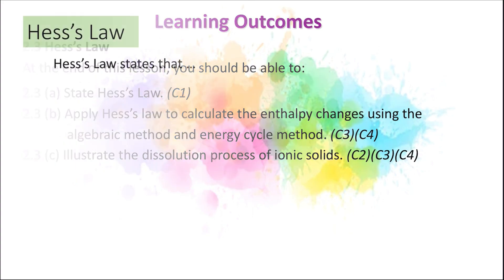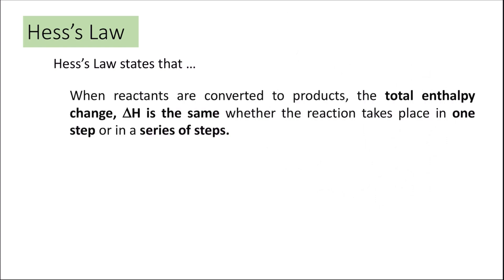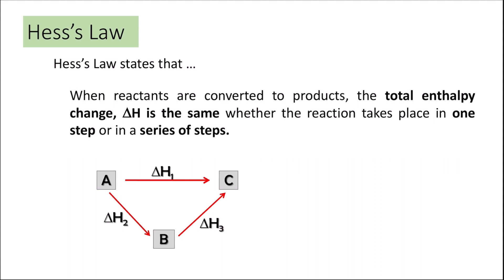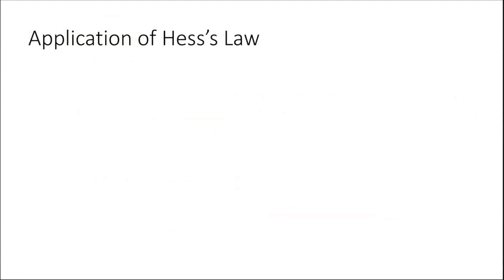First thing first, what is Hess's Law? Hess's Law states that when reactants are converted into products, the total enthalpy change ΔH is the same whether the reaction takes place in one step or in several series of steps. For example, A produces C in one step, but A can also produce C by going through B first — two steps — and the ΔH will be the same, where ΔH₁ equals the summation of ΔH₂ and ΔH₃.